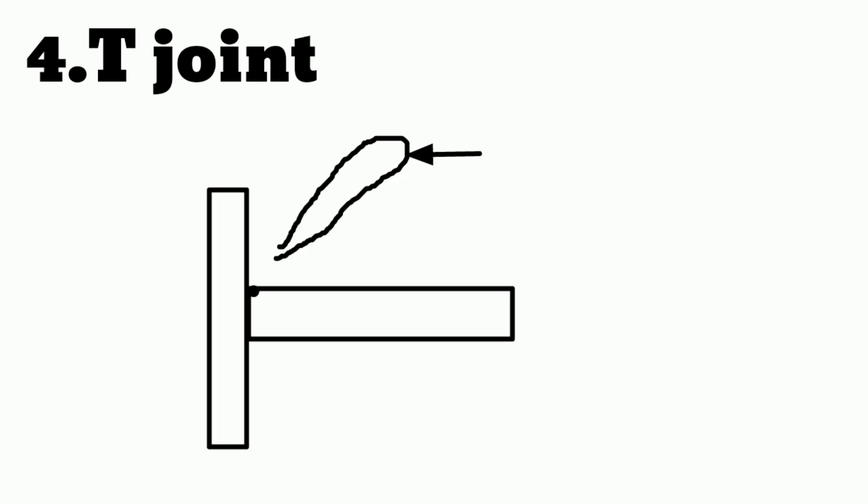Now the fourth one is T joint. In this type of joint, one part is at a right angle to another part and joined in a T shape, as shown in the figure.